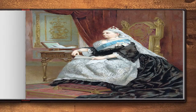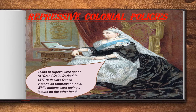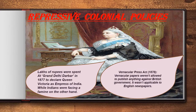The repressive colonial policies followed by the British also fueled nationalism amongst the Indians. A Grand Darbar was organized by Lord Lytton in Delhi in 1877 to proclaim Queen Victoria as the Empress of India. A great famine also broke out in Bengal at the same time. While millions of rupees were spent on the Grand Darbar, nothing was done to help Indians suffering from the famine. The Vernacular Press Act, passed in 1878 by Lord Lytton, empowered the government to confiscate newspapers if they printed anything against the British government.